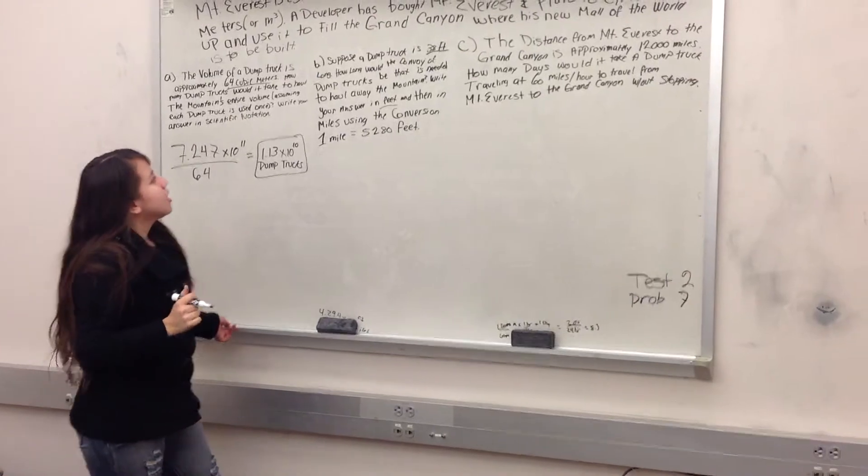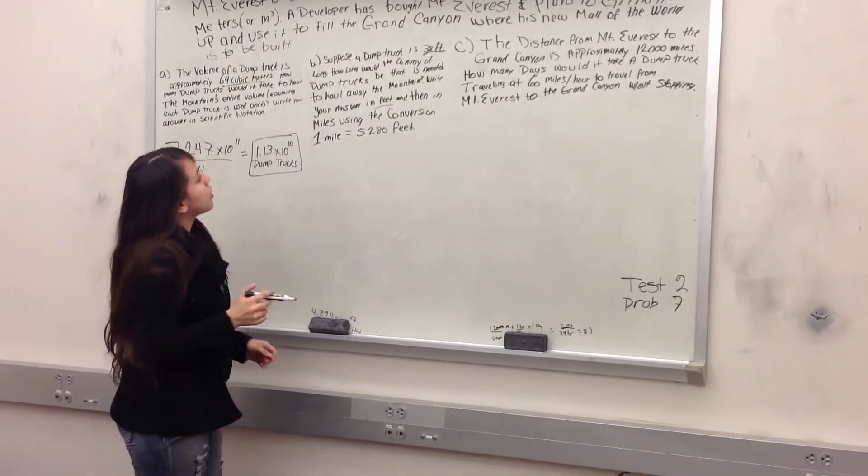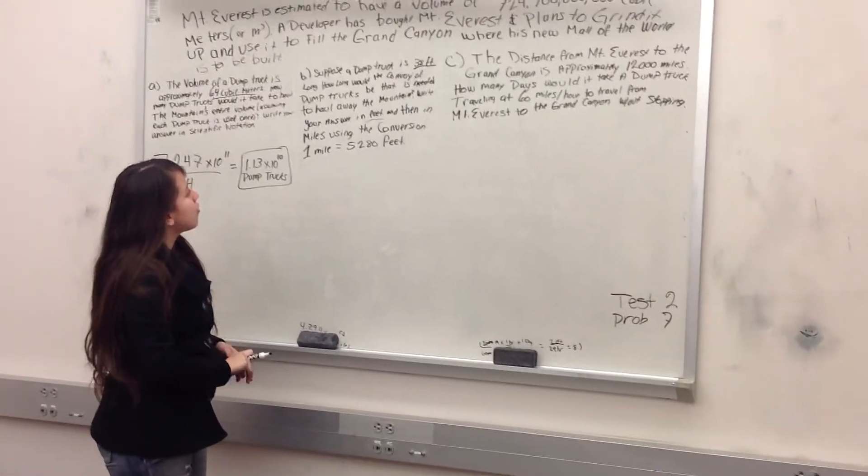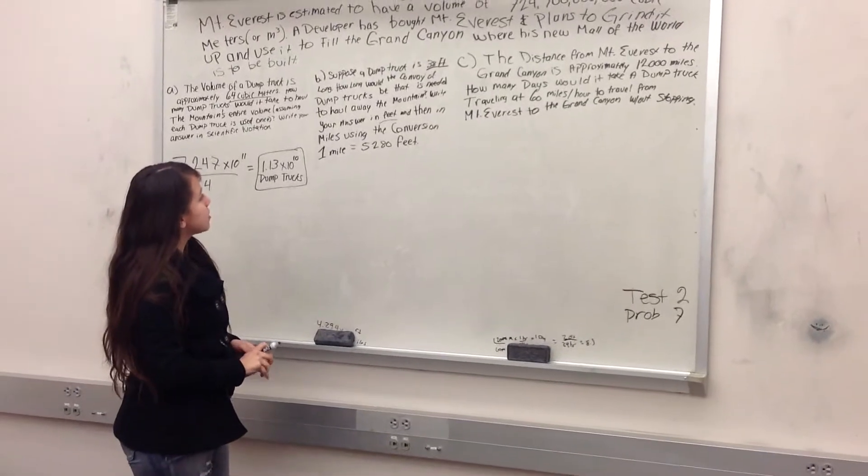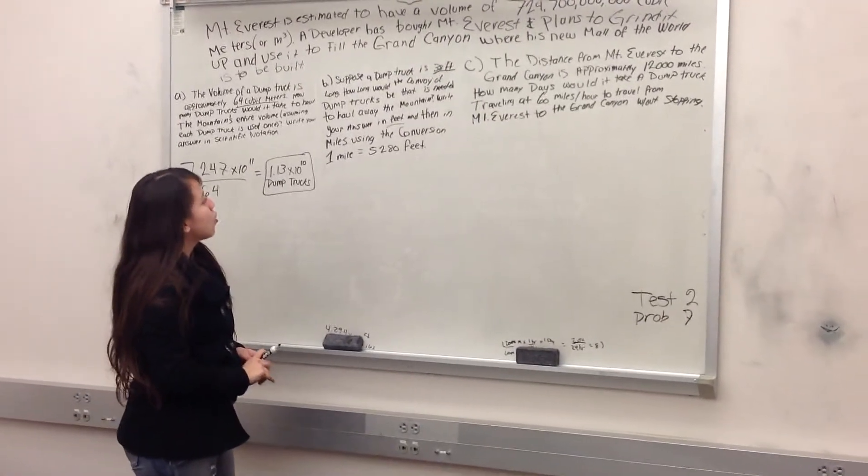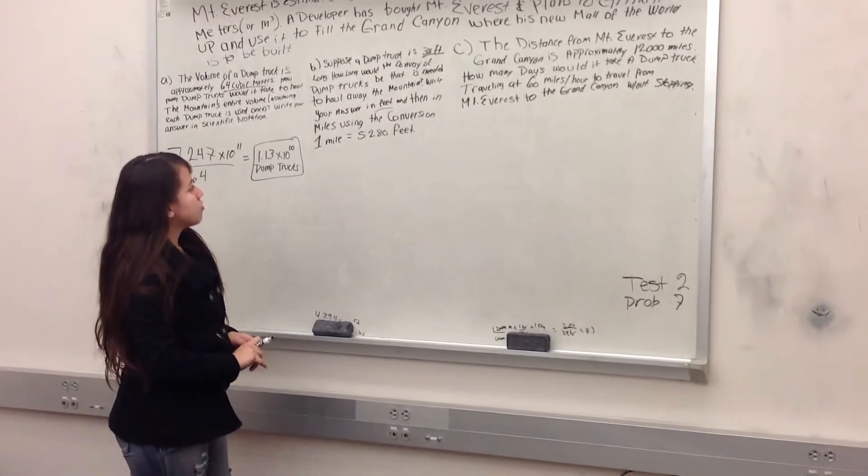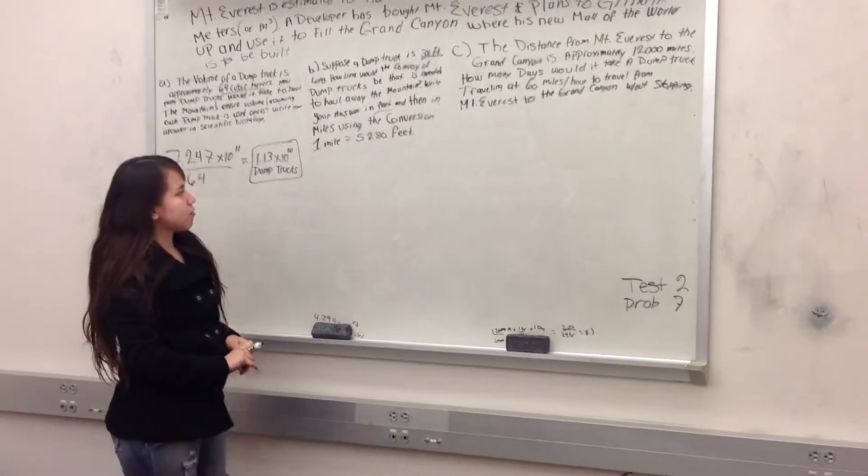And then in part B, it says, suppose the dump truck is 38 feet long, how long would the convoy of the dump trucks be that is needed to haul away the mountain? Write your answer in feet and then in miles, using the conversion one mile equals 5,280 feet.